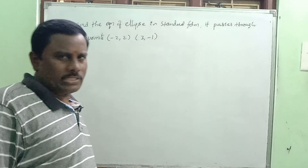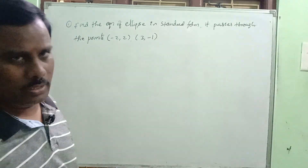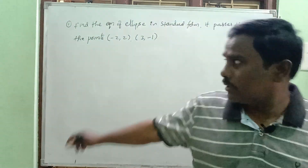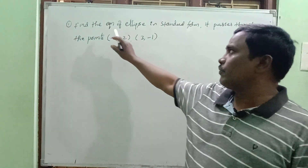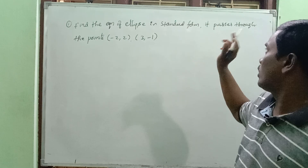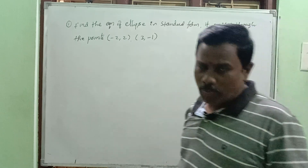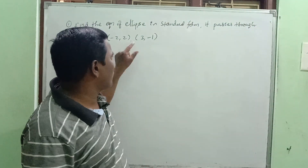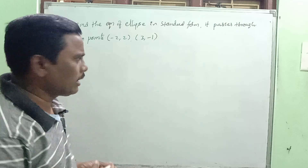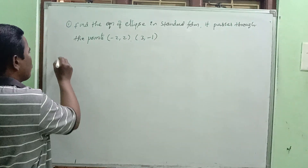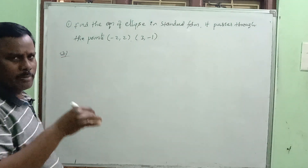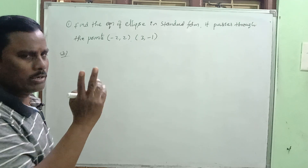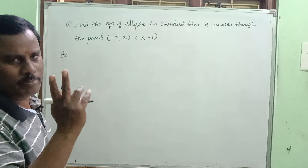Welcome to my channel. This is a last year model question — a ready question. Find the equation of the ellipse in standard form. It passes through the points minus two comma two, and three comma minus one. Very easy question. We know the values of a and b and the two points.